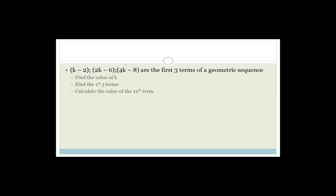So this is a typical exam question. It gives you k minus 2, 2k minus 6, and 4k minus 8 as the first three terms of a geometric sequence. Remember, what is a geometric sequence? It is something that has a common ratio. So it's AR to the N minus 1, where A is your first term, N is the nth term, and R is your common ratio, which is T3 over T2, which also equals T2 over T1. As soon as you see the word geometric, you should be thinking common ratio.